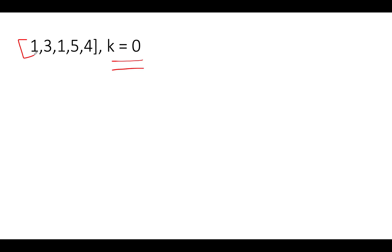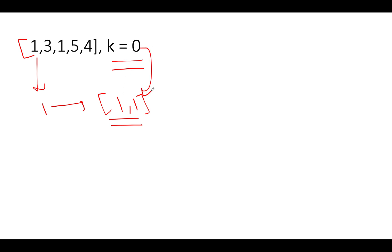However, the set-based approach won't work for k = 0. To form a pair with difference 0, you need two elements with the same value. Since a set eliminates duplicates, it can't detect that case. So we need to migrate to a map, where the key is the element and the value is its frequency.